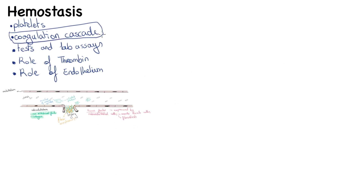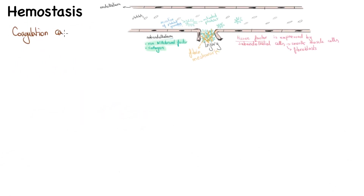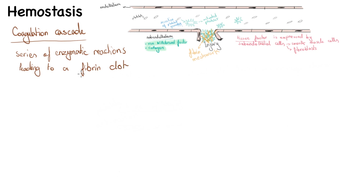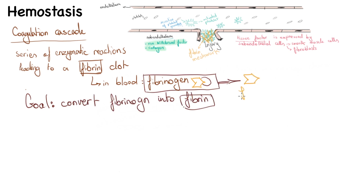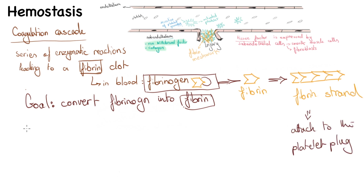A coagulation cascade is a series of amplifying enzymatic reactions leading to the deposition of an insoluble fibrin clot. So far we know about our platelet plug, but we also need fibrin strands to be added to it in order to consolidate it. Fibrin is not found directly in blood but instead in the form of fibrinogen. The goal of the coagulation cascade is to convert fibrinogen into fibrin.